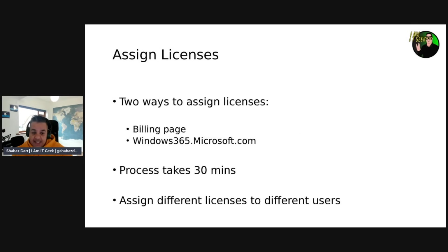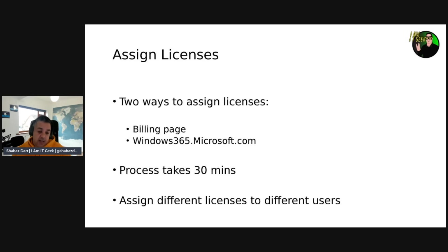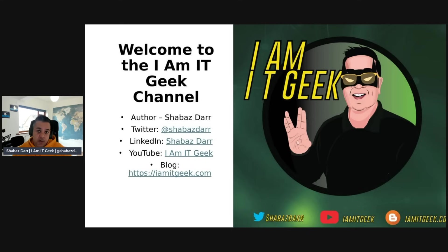Assigning licenses is no different from how you assign an M365 license. Whether you purchased through the Windows product site or the admin center, you assign licenses through the billing page on the M365 admin center, or you can go to windows365.com. As soon as you assign that license to a user, Windows 365 will create that Cloud PC — which can take up to 30 minutes. You can assign different Windows 365 Business license types based on the user's business needs.